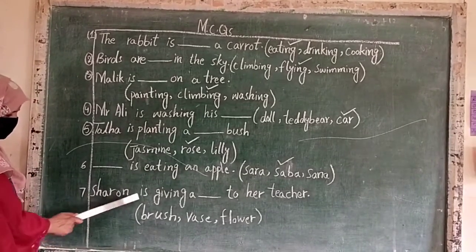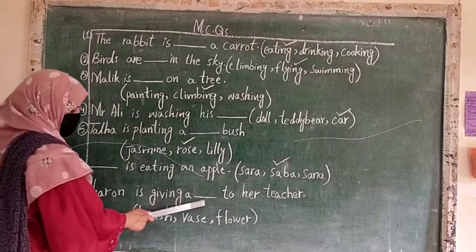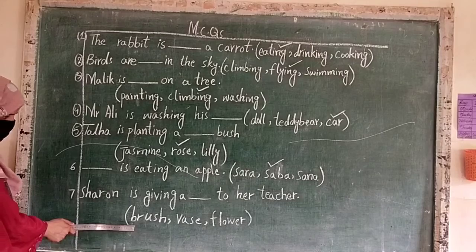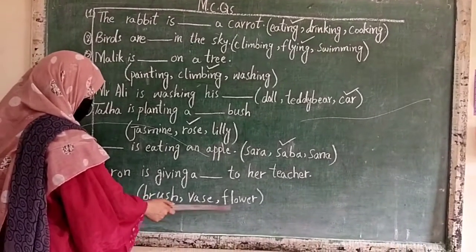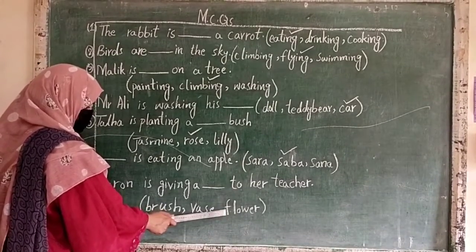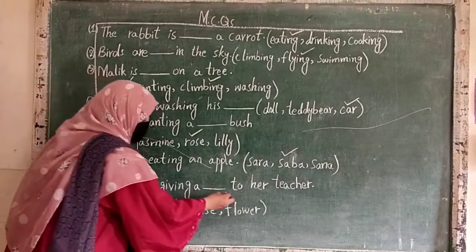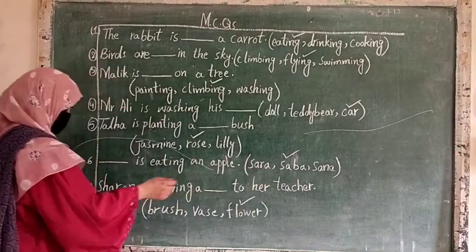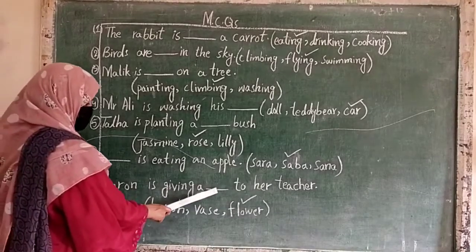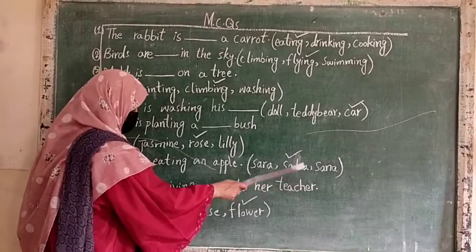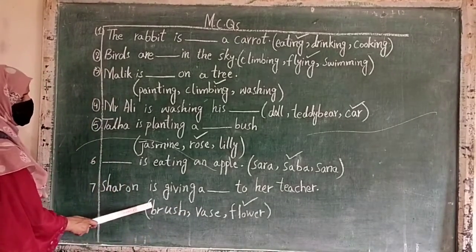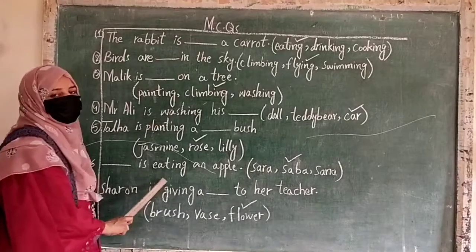Number 7: Sharon is giving a ___ to her teacher. Saba is giving a ___ to her teacher.